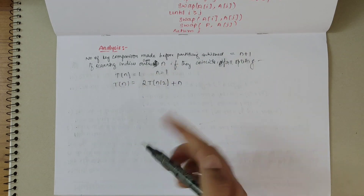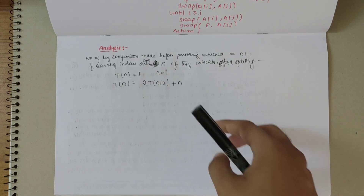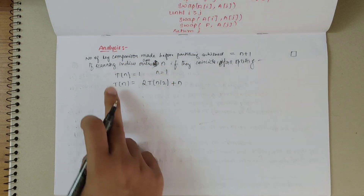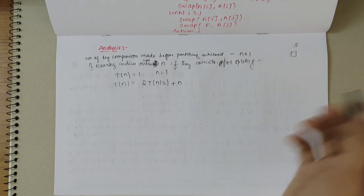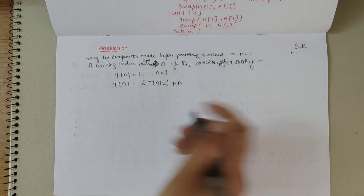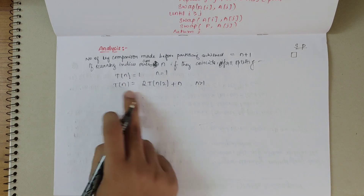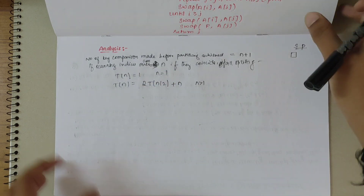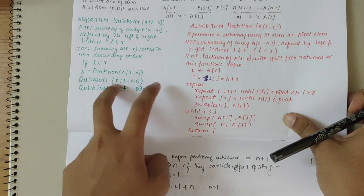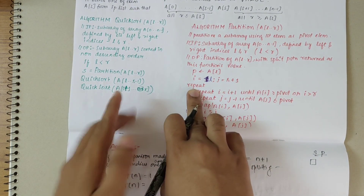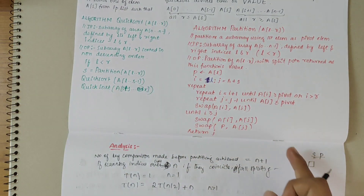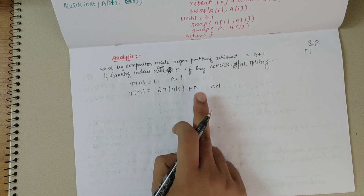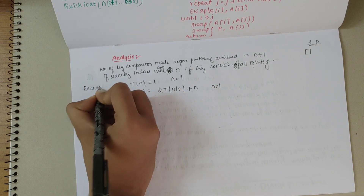Now let's look at the analysis of QuickSort. The number of key comparisons made before partitioning is achieved is n+1 if scanning indices crisscross, or n if they coincide. The recurrence relation is: T(n) = 1 if n=1 (only one element, directly the partition value), and T(n) = 2T(n/2) + n if n > 1. The 2T(n/2) comes from splitting twice — leftmost to partitioning element, and partitioning element to rightmost — plus n comparisons for partitioning.